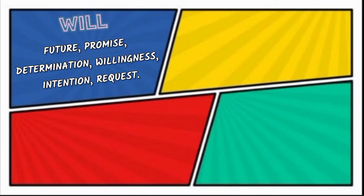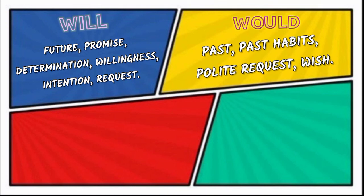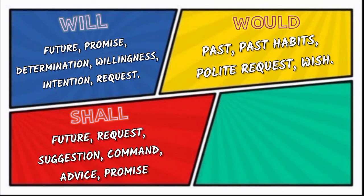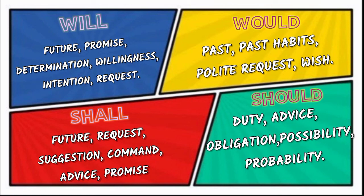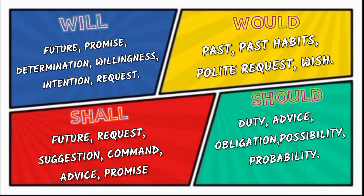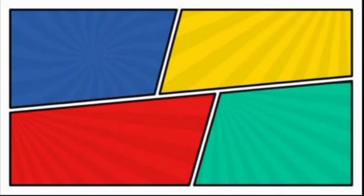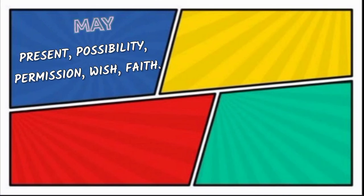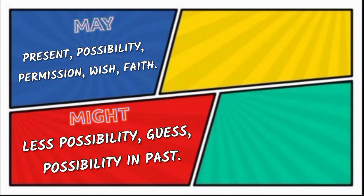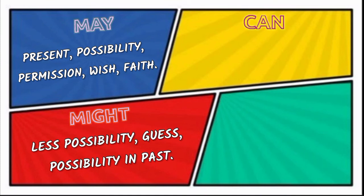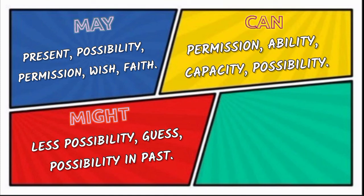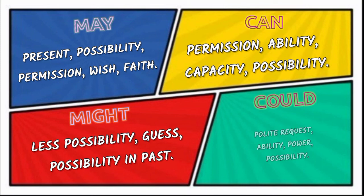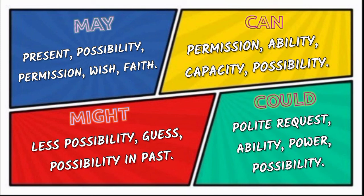Will is used to show future, promise, determination, willingness, intention, or request. Would is used for past, past habits, polite request, and wish. Shall is used for future, request, suggestion, command, advice, and promise. Should is used for duty, advice, obligation, and possibility. May is used for present, possibility, permission, wish, and faith. Might is used for less possibility, guess, and possibility in past. Can is used for permission, ability, capacity, and possibility. Could is used for polite request, ability, power, and possibility.